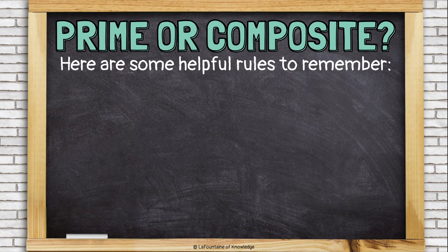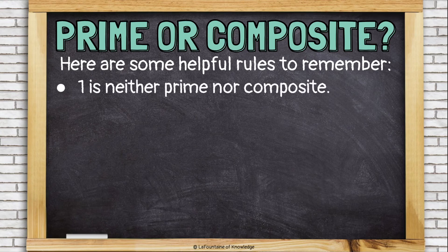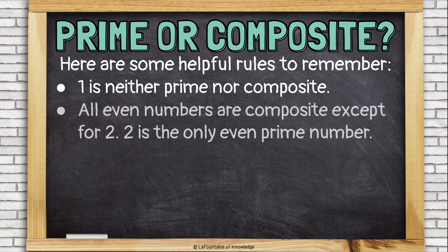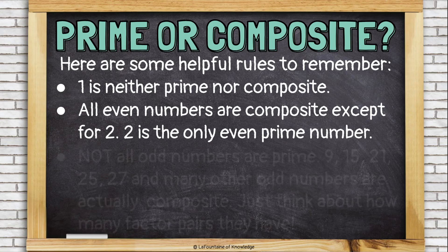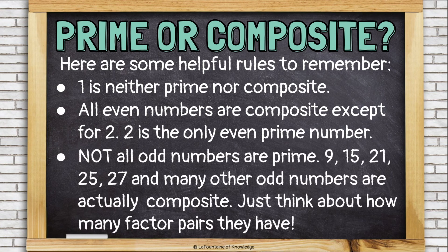Here are some helpful rules to remember when determining whether a number is prime or composite. 1 is neither a prime nor a composite number. All even numbers are composite except for the number 2 — 2 is the only even prime number. Not all odd numbers are prime, though. 9, 15, 21, 25, 27, and many other odd numbers are actually composite. Just think about how many factor pairs they have.